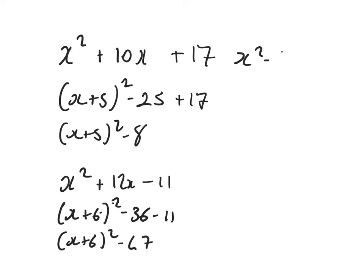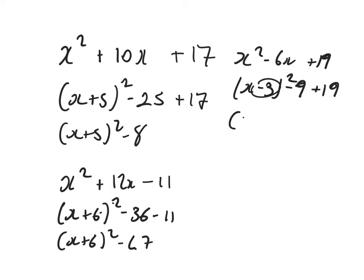x squared minus 6x plus 19. Half the minus 6 down to minus 3. Remember that minus 3 squared is also 9 and I still need to get rid of it, and add on 19, so that would be x minus 3 all squared plus 10.